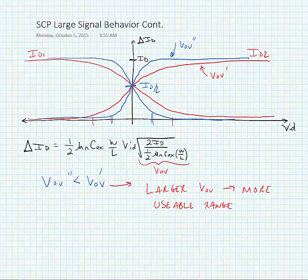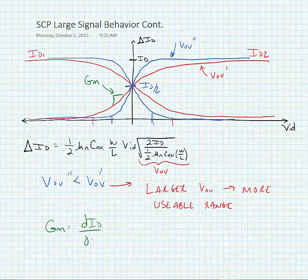We can also find the large signal transconductance of our device. If we look at the slope of these curves, this is essentially big GM. Big GM has been defined as delta ID divided by the change in voltage — in this case, the change in differential voltage VID.